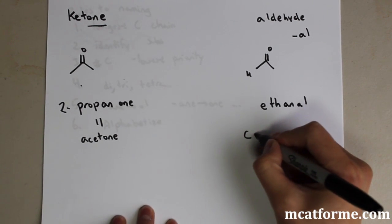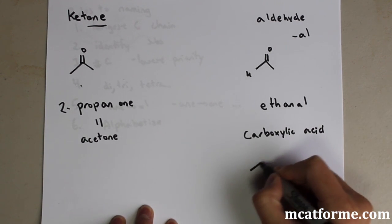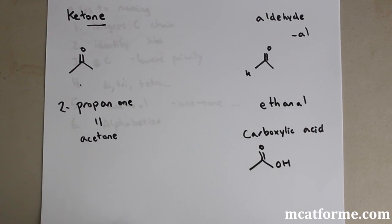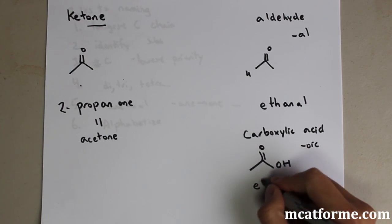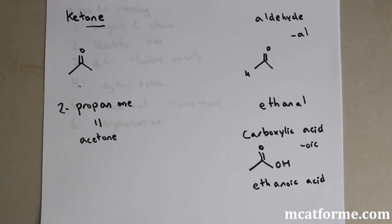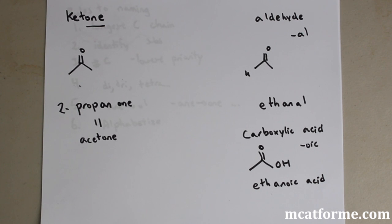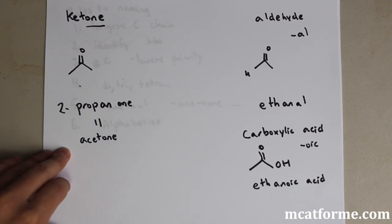The final one is carboxylic acids. Carboxylic acid has an ending '-oic', and then 'acid' at the end. This is two carbons, so the prefix is 'eth', giving us ethanoic acid. We don't need to number it because it's always going to be at the very end — always carbon number one. Ethanoic acid is also called acetic acid, so remember: acetic acid equals ethanoic acid.